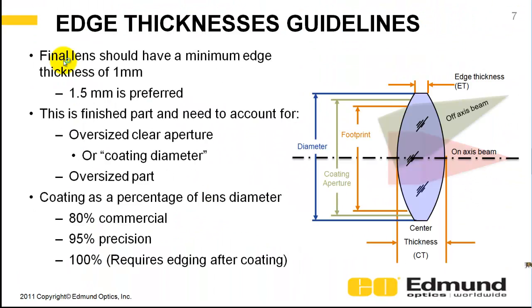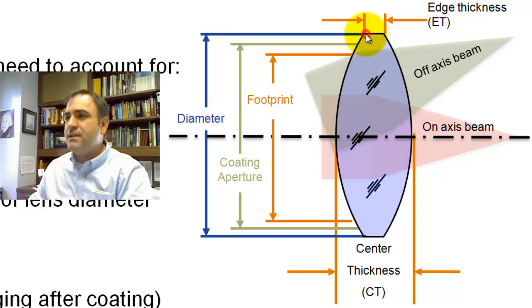A quick comment on edge thickness guidelines when you're doing design or setting a system. So the edge thickness is this thickness here, and it's a function of your radius at the front, the radius at the back, and what your center thickness is from here to here. So I've drawn two beams. You've got an on-axis beam in red and an off-axis beam in light green.